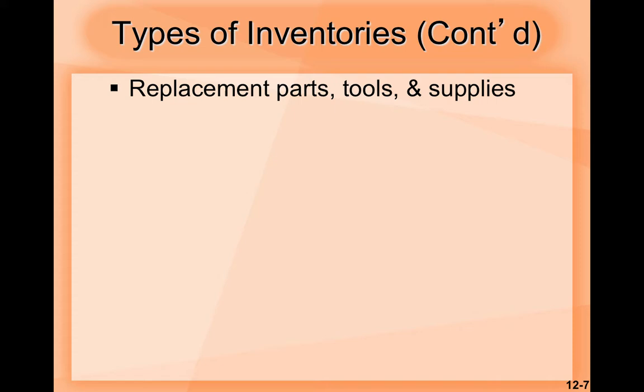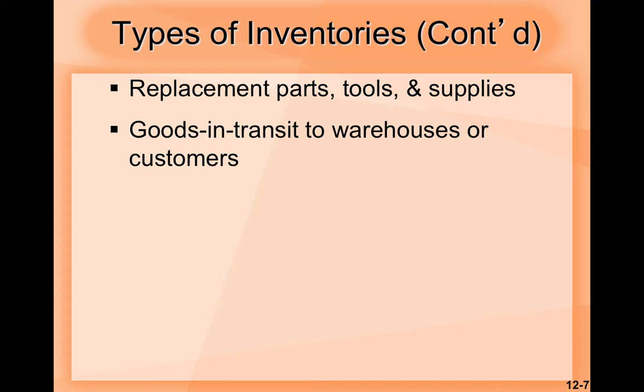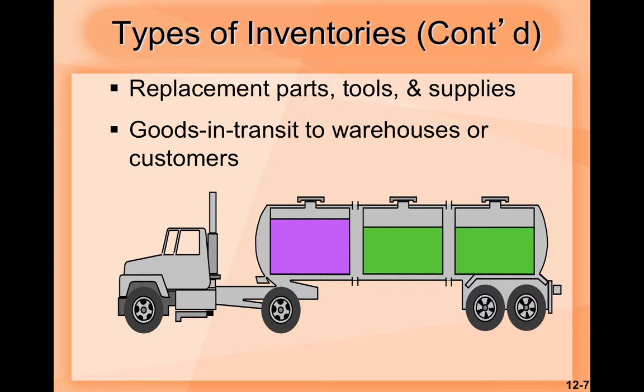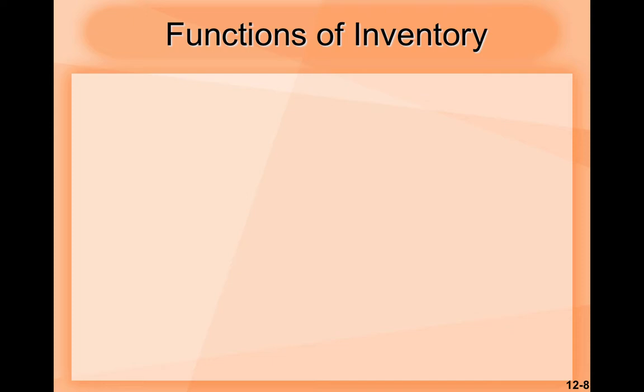Additional types of inventories include replacement parts, tools, and supplies, as well as goods in transit to warehouses or customers. The goods in transit are transported to warehouses or directly to your clients or customers.